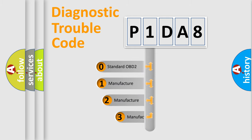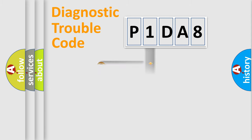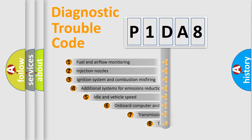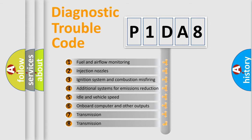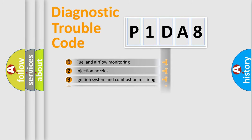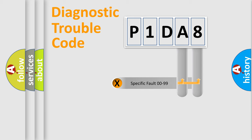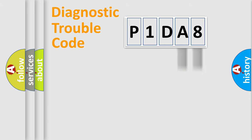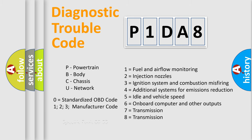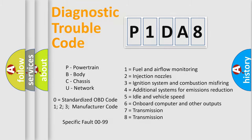If the second character is expressed as zero, it is a standardized error. In the case of numbers 1, 2, or 3, it is a more specific expression of a car-specific error. The third character specifies a subset of errors. The distribution shown is valid only for the standardized DTC code. Only the last two characters define the specific fault of the group. Such a division is valid only if the second character code is expressed by the number zero.